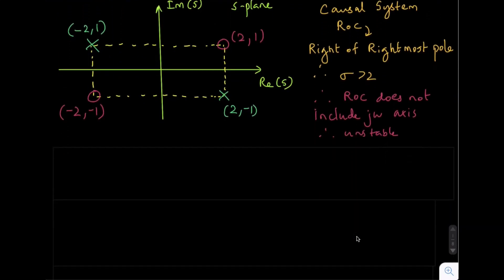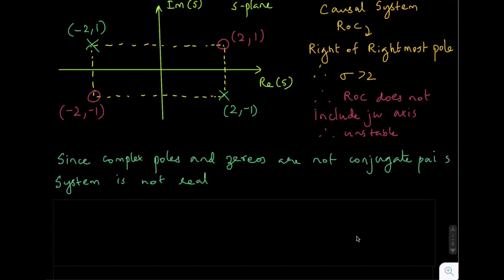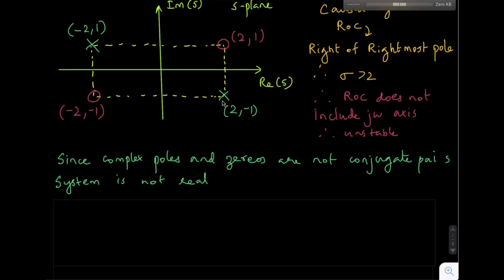If we observe the poles and zeros, they are not in conjugate pairs — specifically the complex poles and zeros. The pole at (2,-1) does not have its conjugate pair, and similarly the zero does not have a conjugate pair. Since the complex poles and zeros are not in conjugate pairs, this system is not real — it must be a complex system.